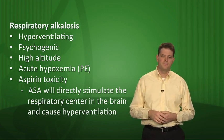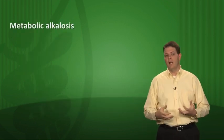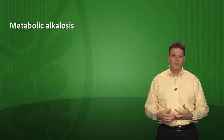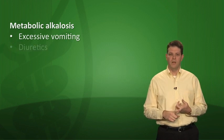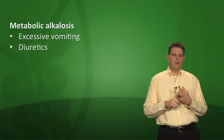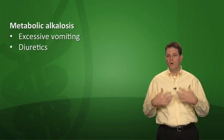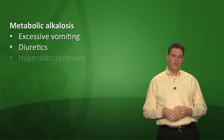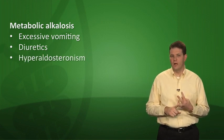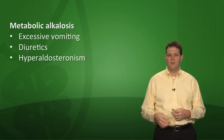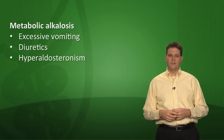Metabolic alkalosis typically occurs when you're losing hydrogen ions. Excessive vomiting can cause it, diuretics can cause it through chloride loss where hypochloremia results in alkalosis, and hyperaldosteronism can cause it as well. With hyperaldosteronism you see a triad of hypokalemia, hypertension, and metabolic alkalosis.